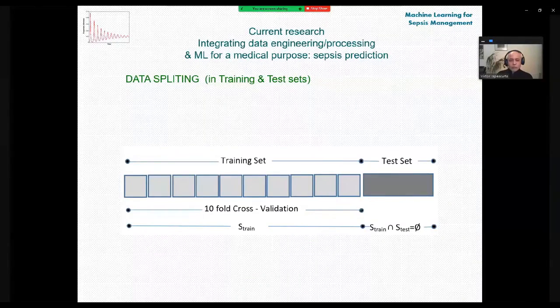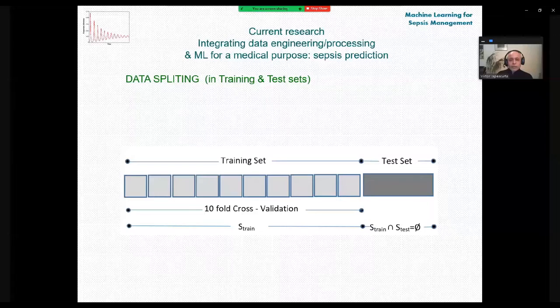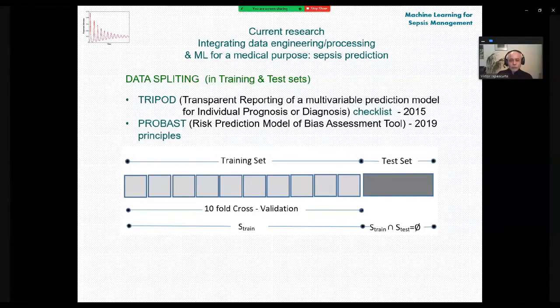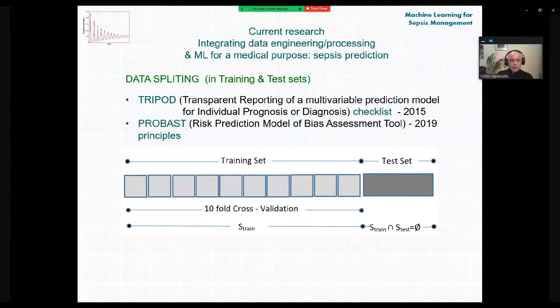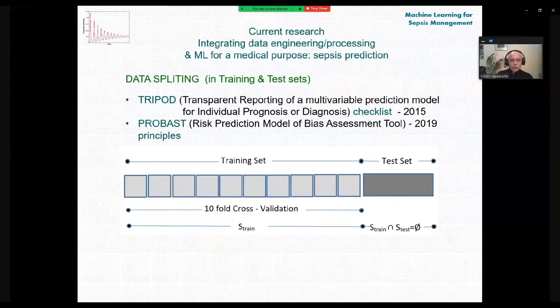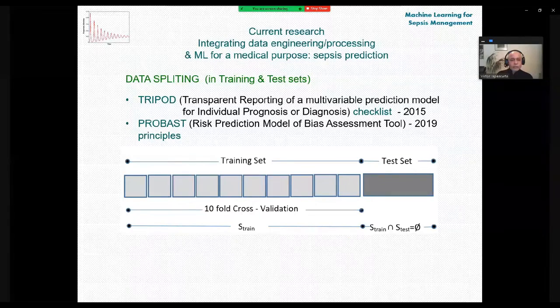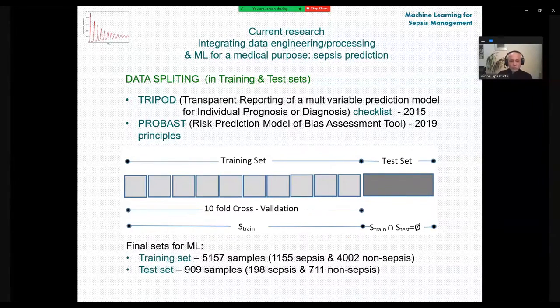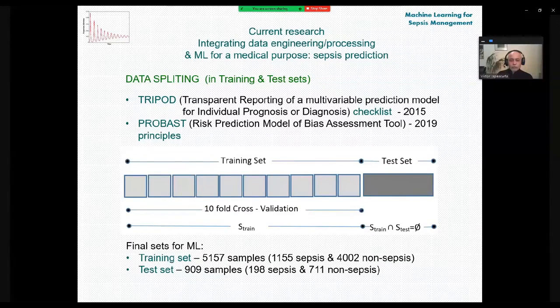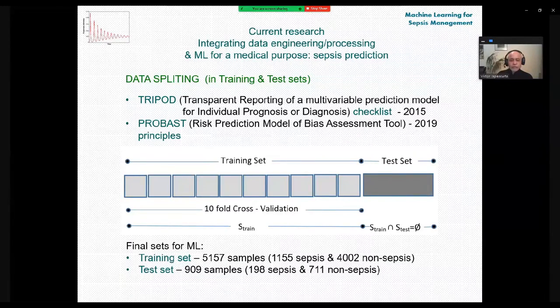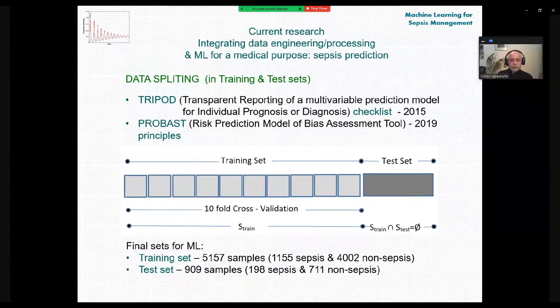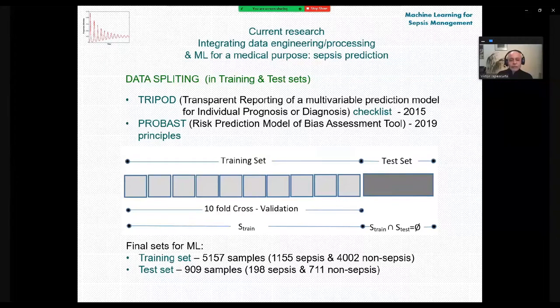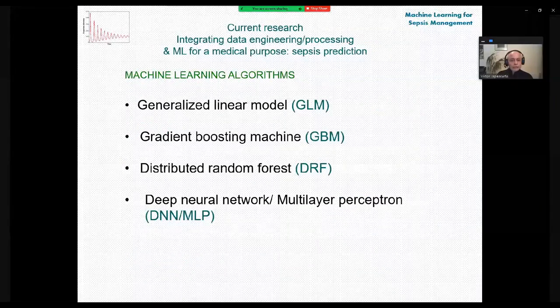Next step will consist on splitting the data into the training and test set. For this, we are using 3-fold and PROBUST principles that will lead us later to perform 10-fold cross-validation during the machine learning phase. And in this way, the final set for machine learning will consist of the training set, including 5,157 samples and the test set that comprises 909 samples.